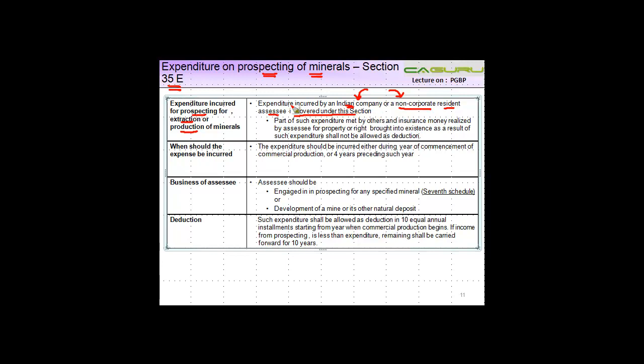If someone else meets a part of it, so let's say if your total expense was 100 and the government gives you 50 rupees back, then your expenditure is only 50. Part of such expenditure met by others, in this case it was government.